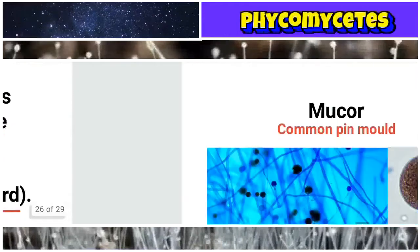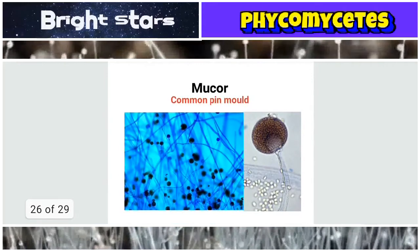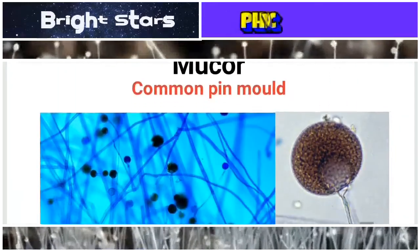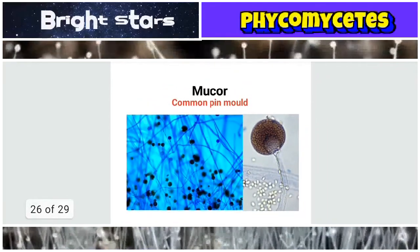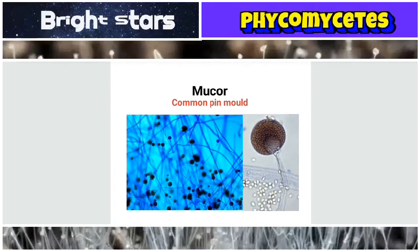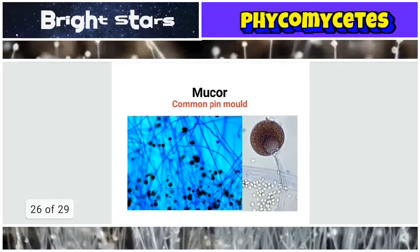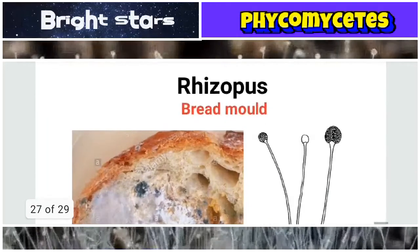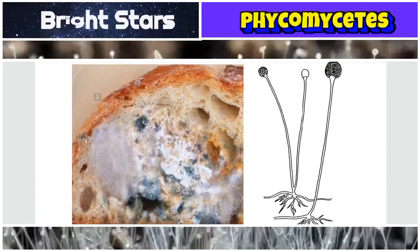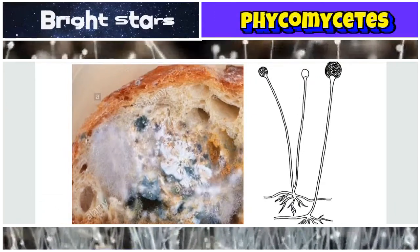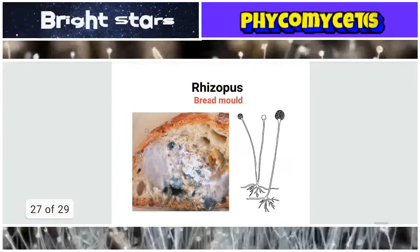Mucor is a Phycomycetes fungus — it is commonly called pin mold. When it emerges from moist or damp soil it produces pin-head-like structures, which is why it is called common pin mold. Rhizopus is commonly called bread mold — whenever bread is kept in moist, dark, and warm places, this fungus develops on it.